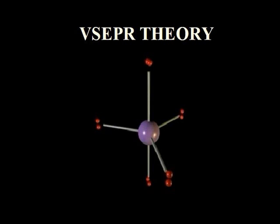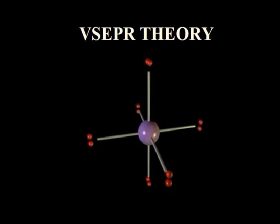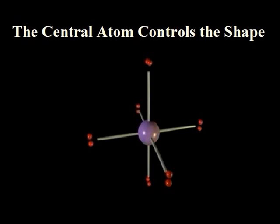Five atoms around the central atom form a trigonal bipyramidal arrangement, and six form an octahedral. It is the central atom that controls the shape, since all of the bonding atoms around it arrange themselves to be as far apart from each other as possible.